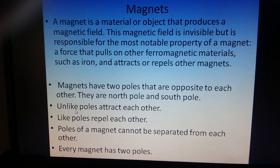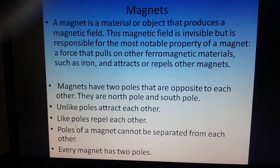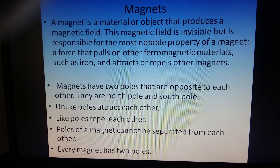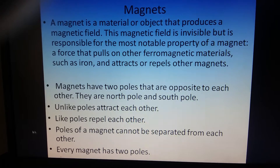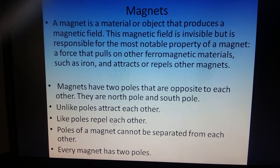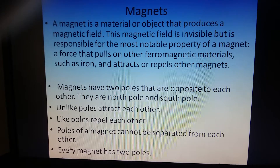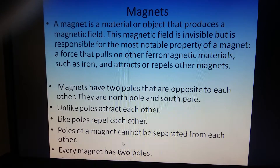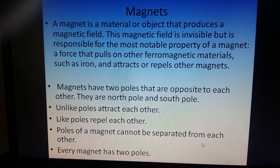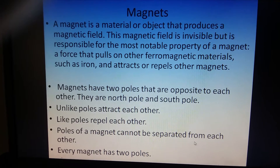Then we saw some properties of magnets. Magnets have two poles — north and south pole. Unlike poles attract each other and like poles repel each other. The poles of a magnet cannot be separated from each other, and every magnet has two poles.